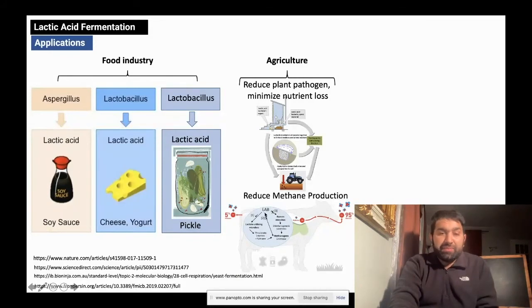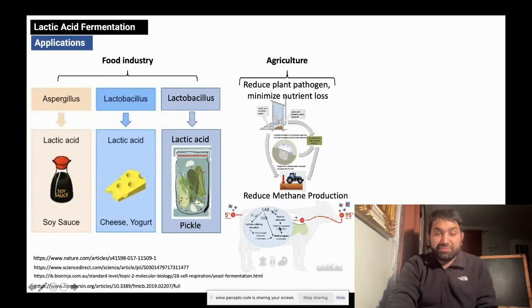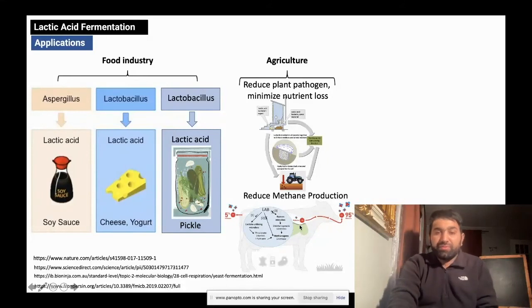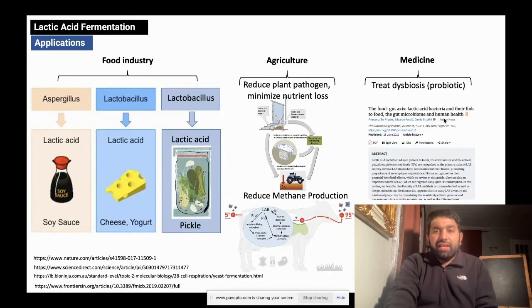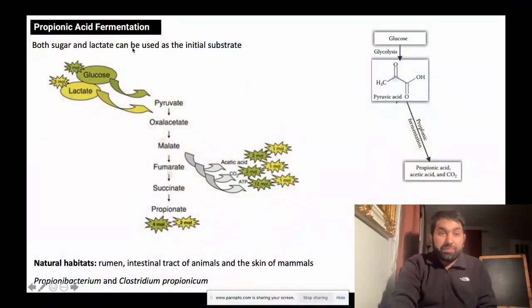A second agricultural example involves methane consumption in the animal gut. When lactate-utilizing microbes are present in the rumen, the product acetate helps methanogens colonize the gut through a syntrophic mechanism, resulting in reduced methane release into the atmosphere. In medicine, lactic acid fermentation has been used to treat dysbiosis due to its probiotic effects, and this area is also being investigated.